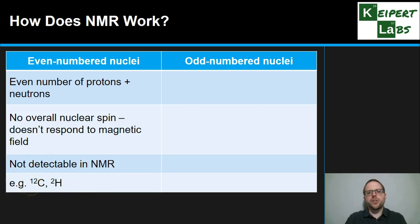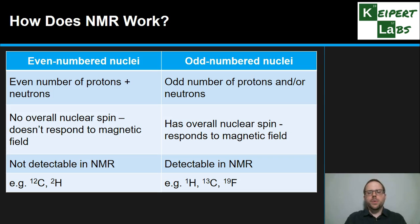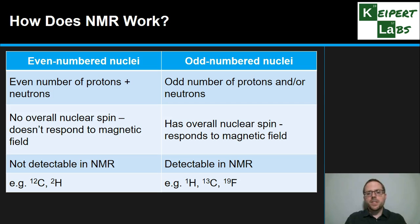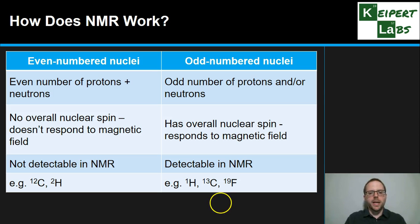The isotope deuterium — hydrogen with a mass number of two — is also not detectable, making up a small percentage of hydrogen isotopes. However, odd-number nuclei, with an odd number of protons or neutrons, have an overall nuclear spin and respond to the magnetic field, making them detectable in NMR. For example, regular hydrogen atoms or protons with mass number one, carbon-13, and fluorine-19 are all detectable. Carbon-13 gives us useful information about the carbon structure of an organic compound.